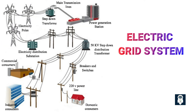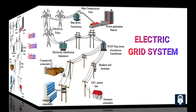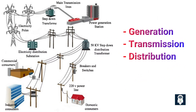An electrical power system, also known as an electric grid, is a network of interconnected components that supplies electricity to end-users. It consists of three main parts: generation, transmission, and distribution.